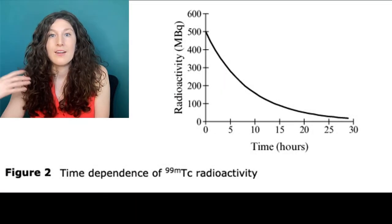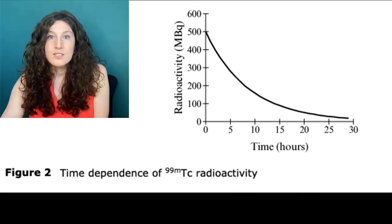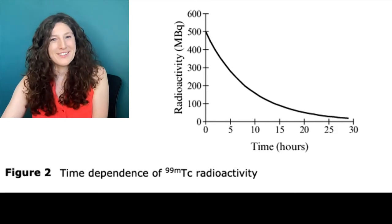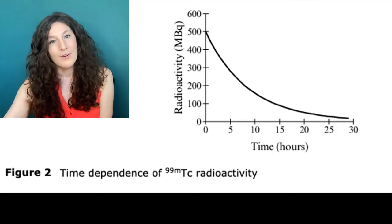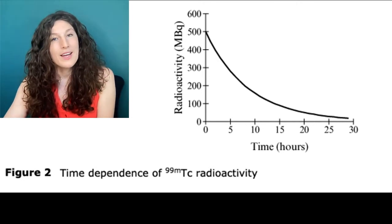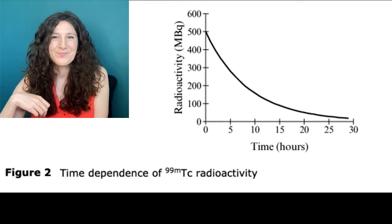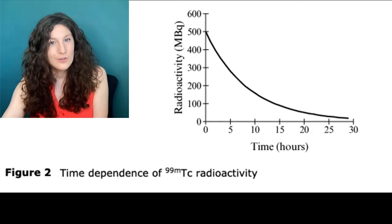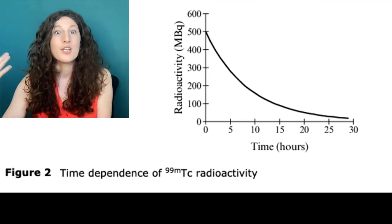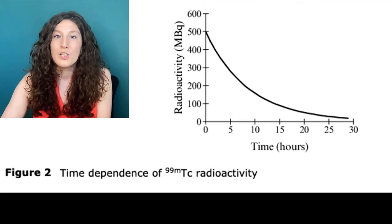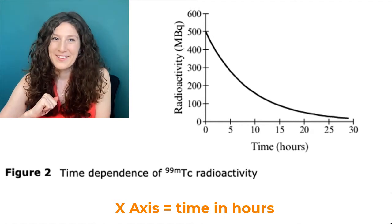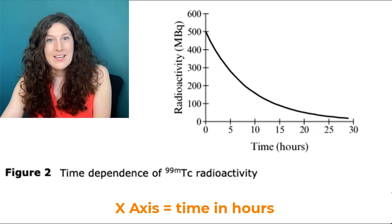Let's take a look at a figure. This is Figure 2 — first up, we want to read the description. Always read the description, because that will give you a good sense of what the figure is telling you. In this case, we have the time dependence of radioactivity of this element. Take a look at the figure, look at your axes, and try to determine your variables and your trends. The x-axis is usually our independent variable, so this is time — what we're tracking and able to control in the experiment. The unit for that is hours, so if they ask you a question in minutes, we know we'll need to convert.